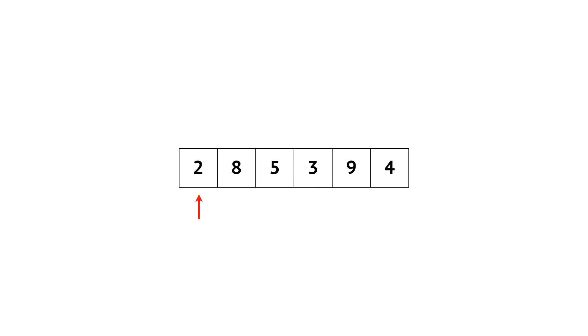We start at 2. Of course there are no items to the left of 2, so we mark it as sorted. Moving on to 8, we compare it to 2 and leave it where it is. Our first two items are now sorted.